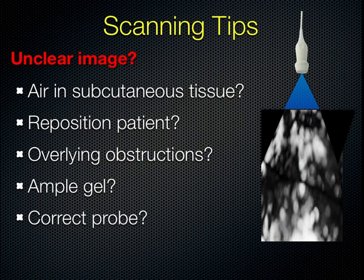When you're having difficulty obtaining an image of the lungs, it's often frustrating. The lungs themselves are fairly impossible to see in a normal aerated lung because air will scatter ultrasound waves. Other things that can interfere with our picture include subcutaneous emphysema, poor patient positioning, overlying obstructions such as EKG pads and monitor clips. If you're not using enough gel, you will get air between the probe and the skin, which can interfere with your picture. Lastly, make sure you have the correct probe for the purpose of your scan.